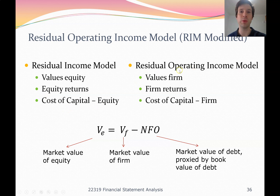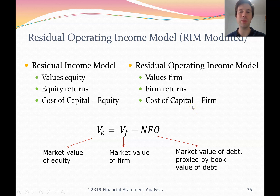The Residual Operating Income Model, the new one we're now looking at, values the whole firm. In the formula it'll be V with a subscript F for value of the firm, and it uses the cost of capital for the whole firm — not the cost of capital for equity. We'll learn more about that in Lecture 10. They can be reconciled using the accounting equation: assets equals liabilities plus owner's equity. So we value the firm, then subtract the debt (net financial obligations) to get the value of the equity.